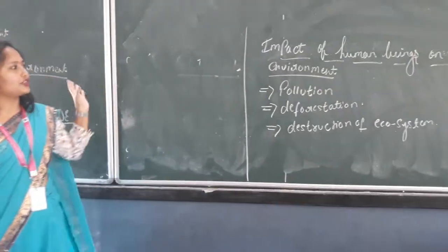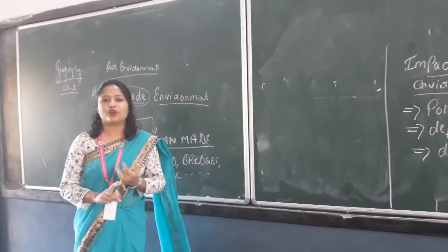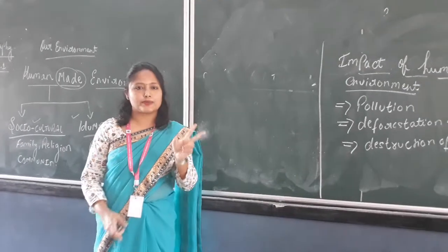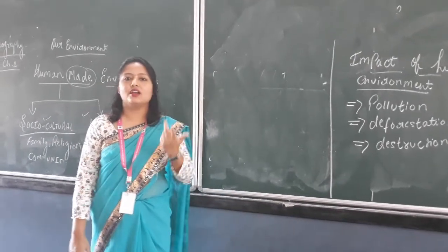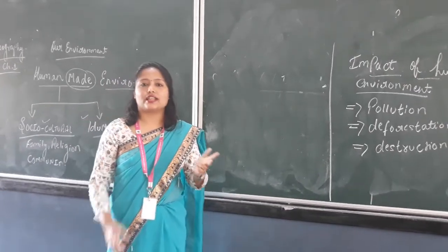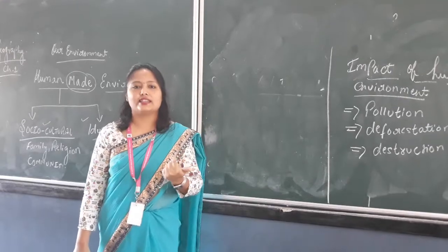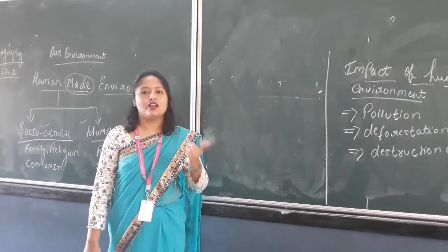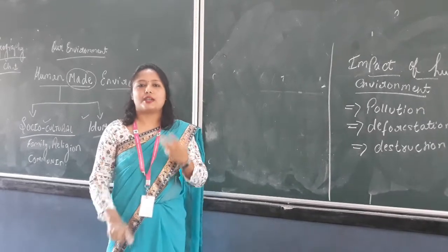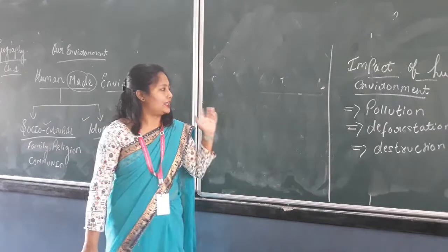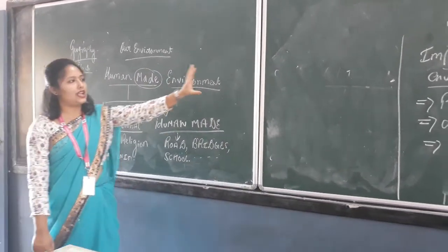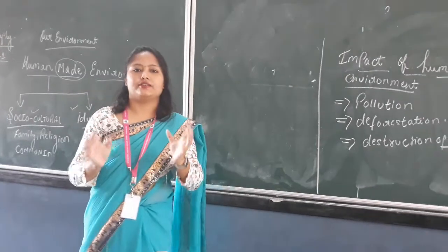With this we conclude the first chapter. Let's recall it once again. Environment is our surroundings. Two types of environment — natural and human made. Natural environment is physical and biological. Physical has three components: lithosphere, hydrosphere, and atmosphere. Biological environment is biosphere. Human made environment has social culture and human made. And last is the impact of human beings on the environment.